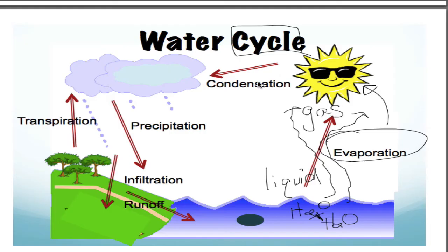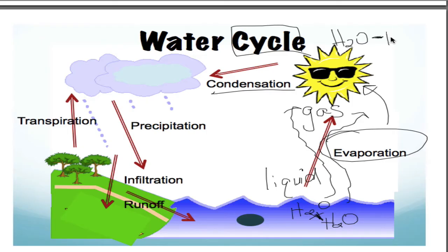If you follow the arrows, we go to condensation next. The reason why this water condenses is because as you go up through the atmosphere, it gets colder and colder. These water molecules with all their energy are going to be losing it, and that water is now going to bond back together. There's going to be a bond between these water molecules, and it turns it back into a liquid in the clouds. So evaporation and condensation are opposites of each other.